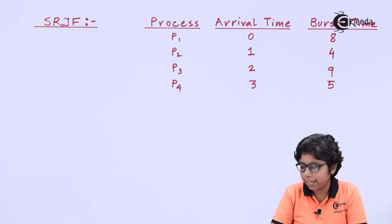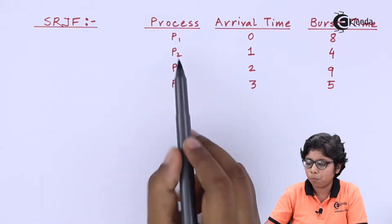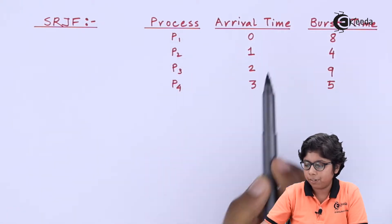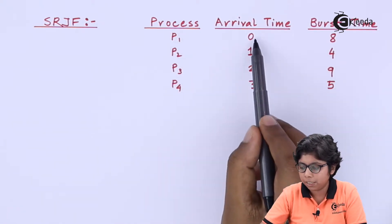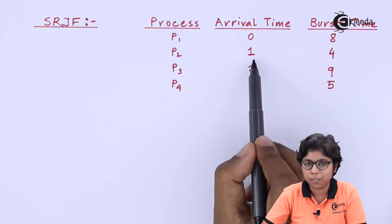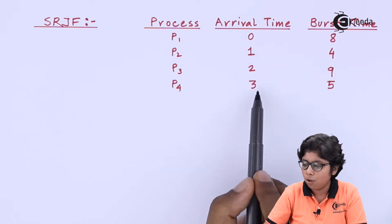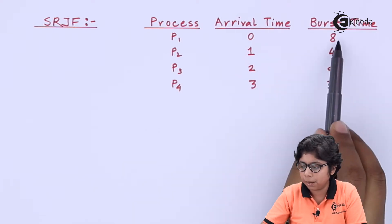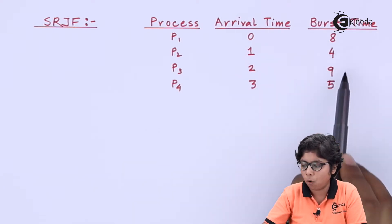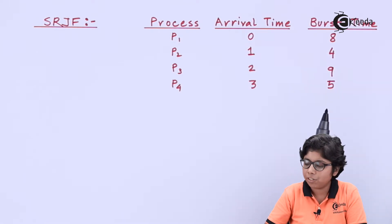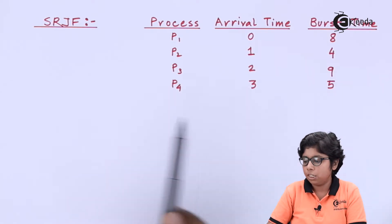We have four processes arriving at 0ms, 1ms, 2ms, and 3ms with burst times of 8, 4, 9, and 5ms respectively. We will now see how to calculate the SRJF scheduling.